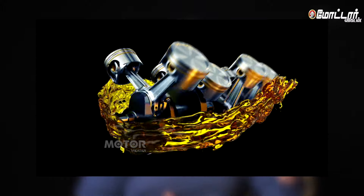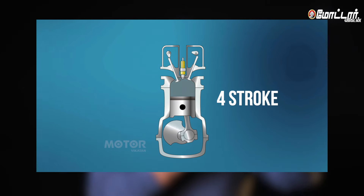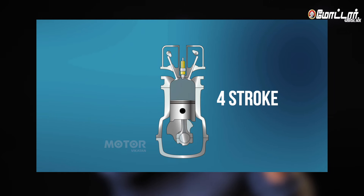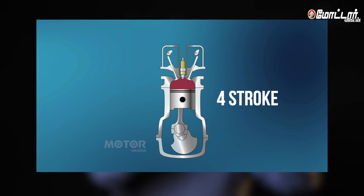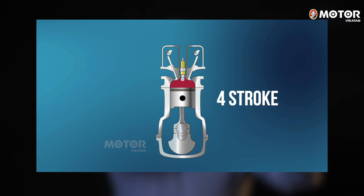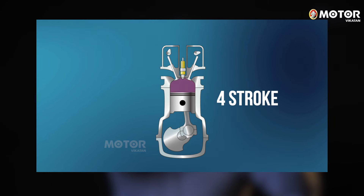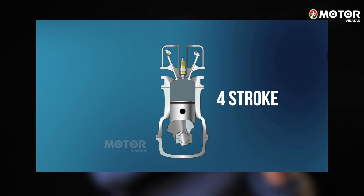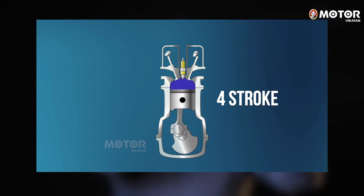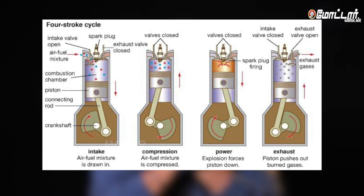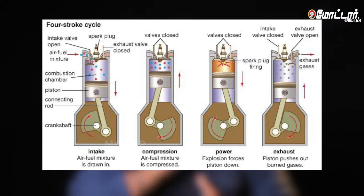In a 4-stroke engine: the first stroke is intake — the piston goes down. The second stroke is compression — the mixture is compressed and ignited. The third stroke is the power stroke. The fourth stroke is exhaust — the exhaust gases are expelled.